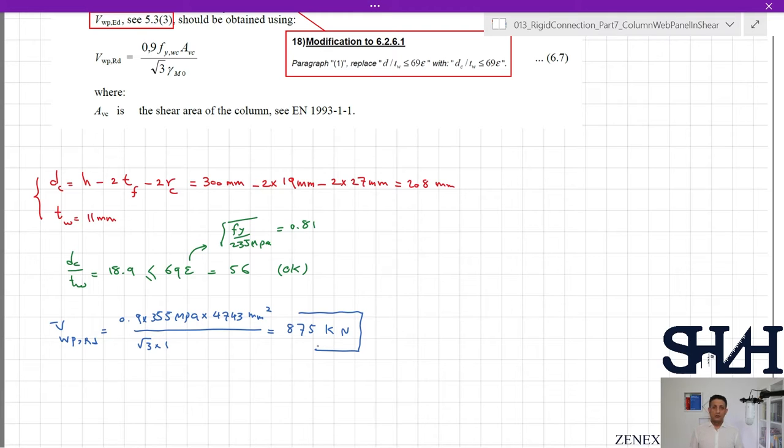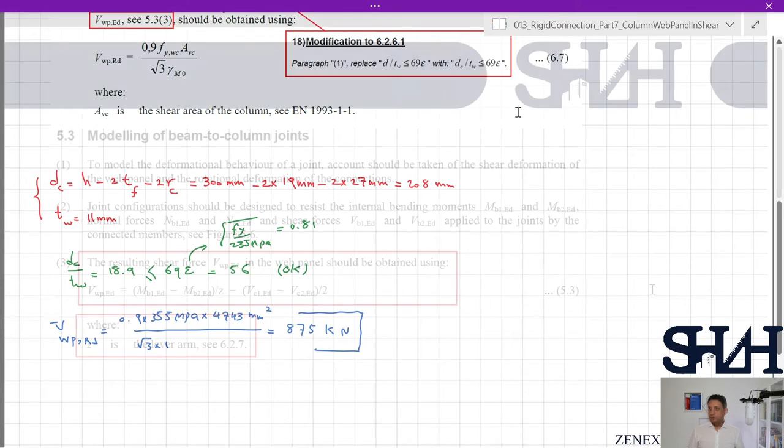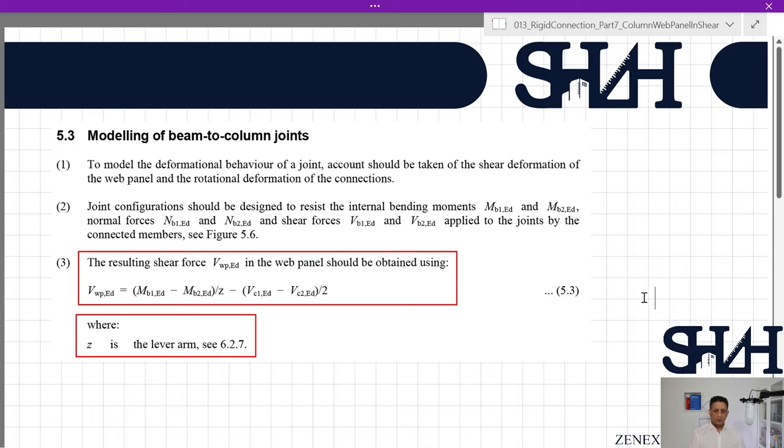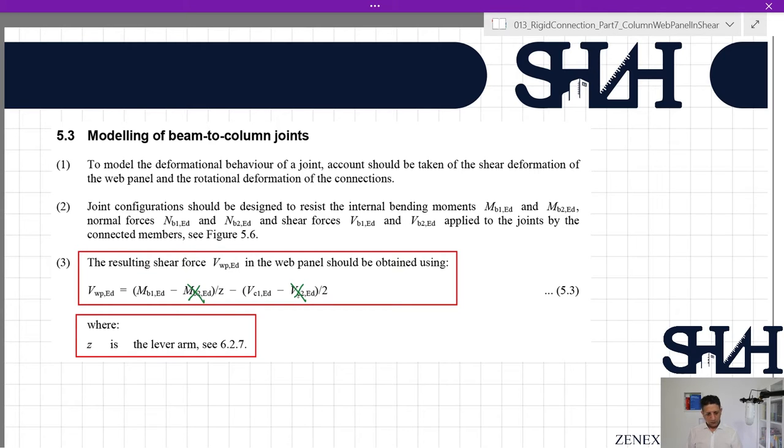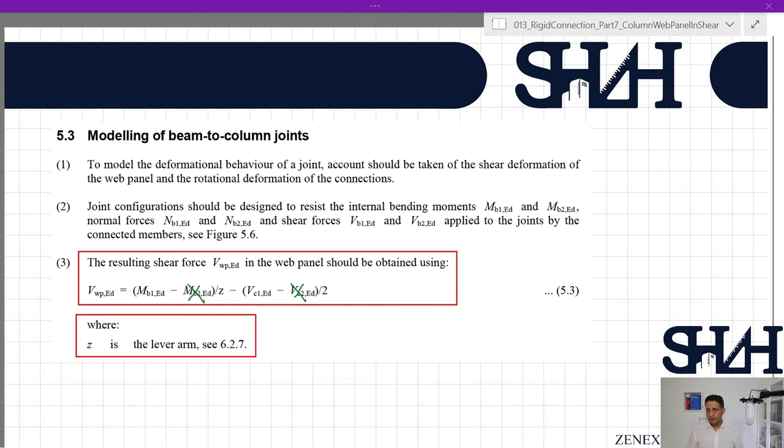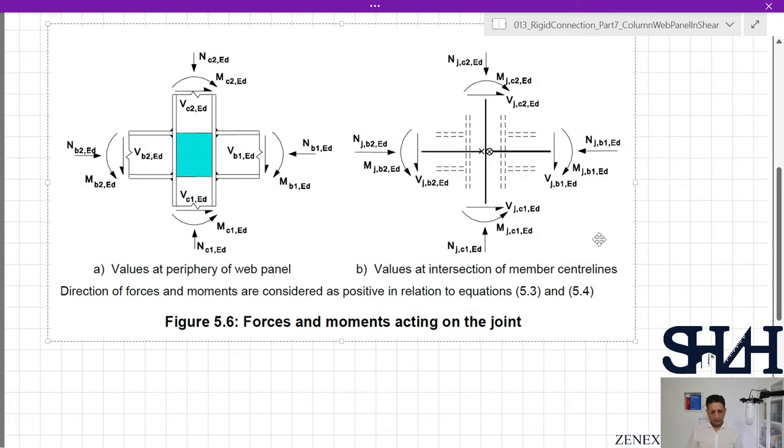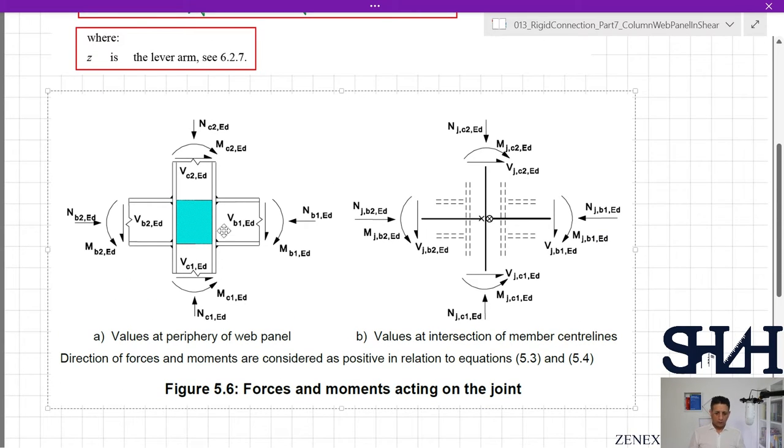We have to check also the design value. The design value is given in Eurocode 1993-1-8, modeling of beam to column joint. Item number three: the resulting shear force vwp,Ed in the web panel should be obtained from this equation. We know that we do not have any Mb2 or Vc2, we have only Mb1 and Vc1.